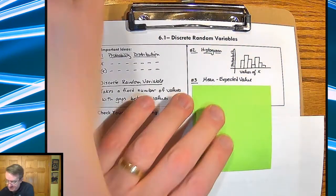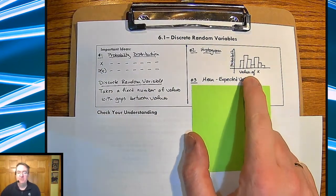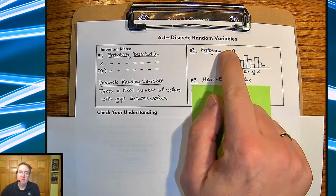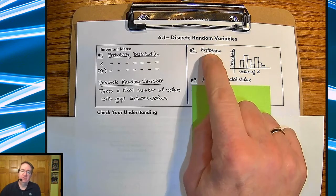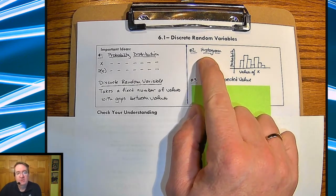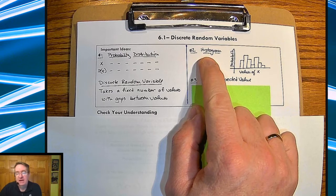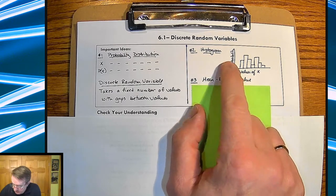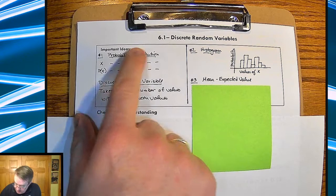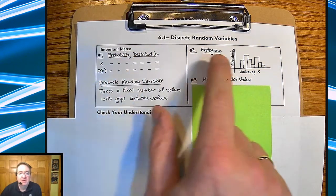A reminder of what histograms are and how they're set up. Values of x go down here. The probabilities are going up on the side. So students should know how to do histograms. You can look back on how to display data. However, this is just a reminder of where this information from the probability distribution is going to go.